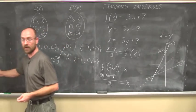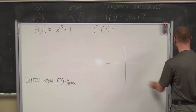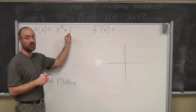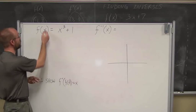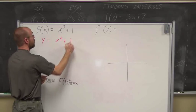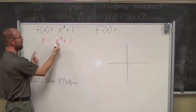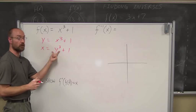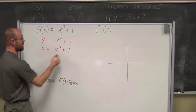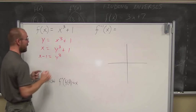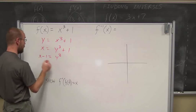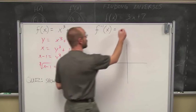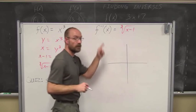Let's look at one more algebraic example. I want to find the inverse of f of x equals x cubed plus 1. Replace f of x with y, then swap x and y so that y cubed plus 1 equals x. Solve for y: subtract 1 from both sides, then take the cube root of both sides. This gives the cube root of x minus 1 equals y, so the inverse function is f inverse of x equals the cube root of x minus 1.